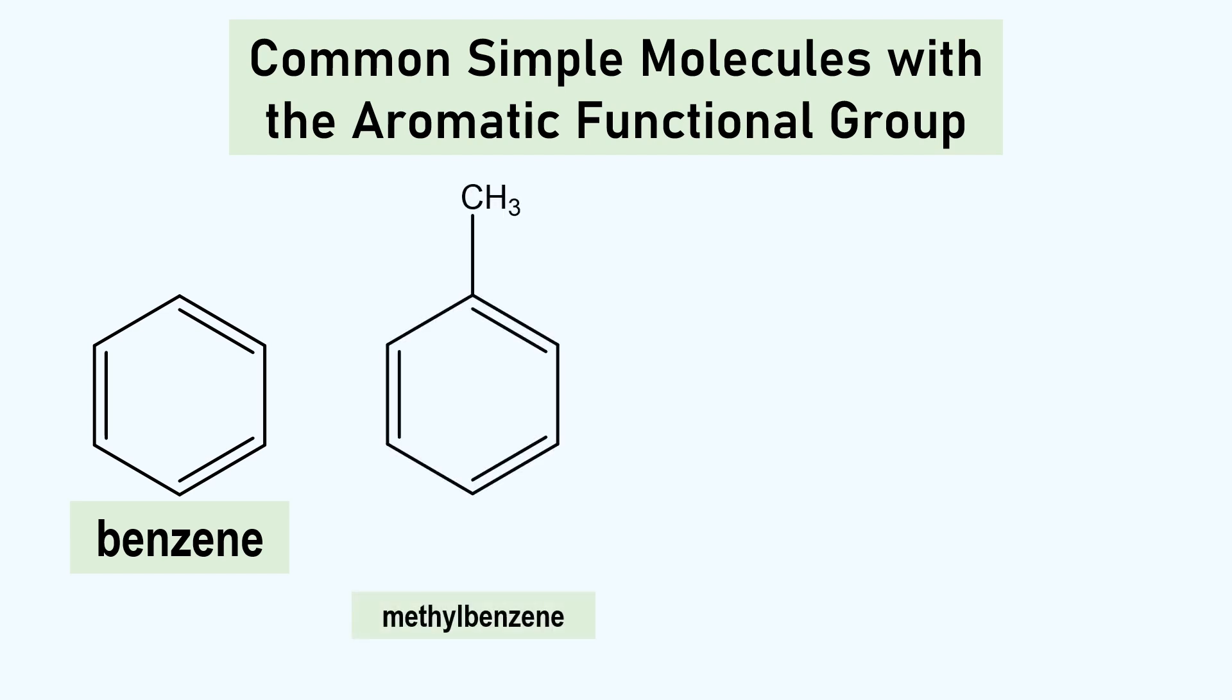When a single methyl group substitutes a hydrogen, the molecule is called methylbenzene. But this molecule also has a common name which is mostly used among chemists. This is toluene.